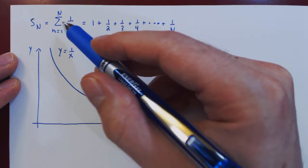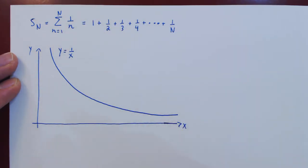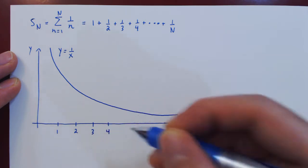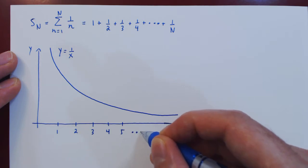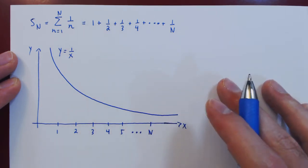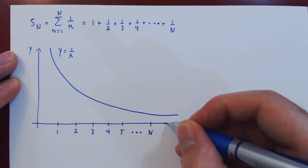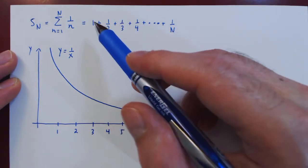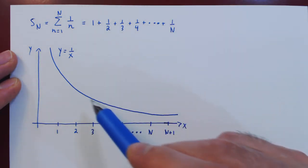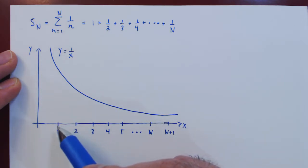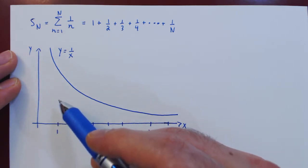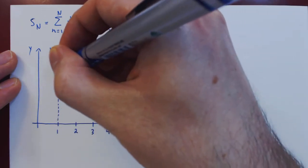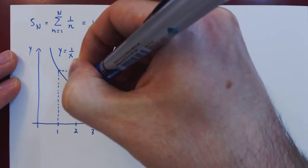Since n only jumps over the positive integers, we only consider values of x on positive integers. I will include one extra point from n to uppercase N plus 1, and you will see why in a few seconds. We want to show that this summation is larger than the area below the curve 1 over x. So on a given interval, we will take the y-value on the left endpoint of the interval to give us the height of the rectangle, so that the area of the rectangle will be larger than the area below the curve on each given interval.